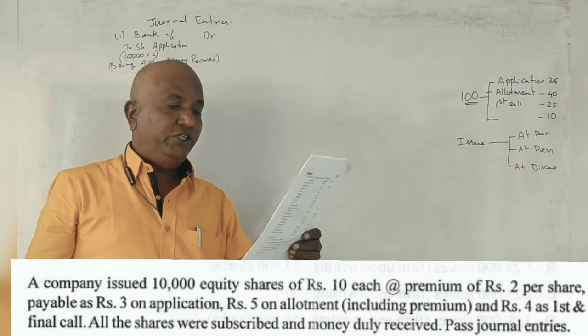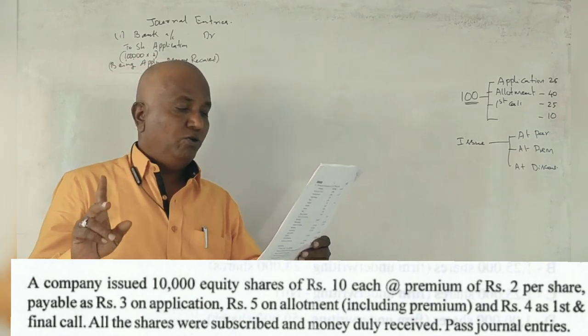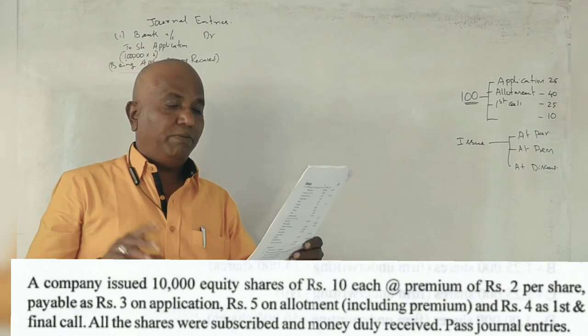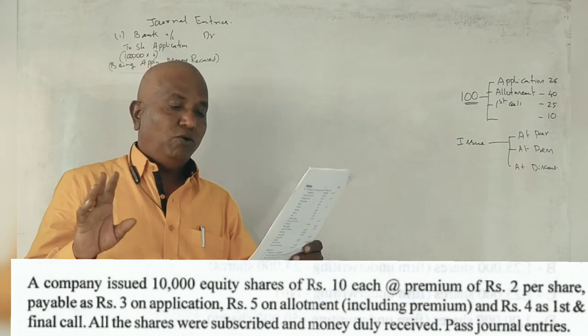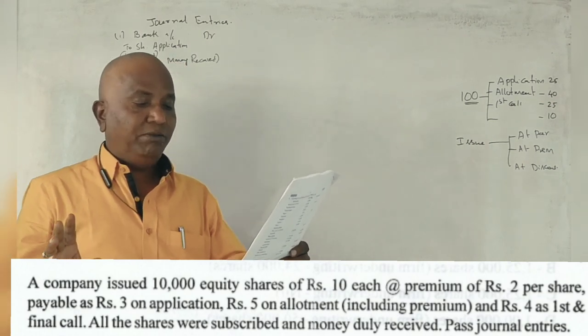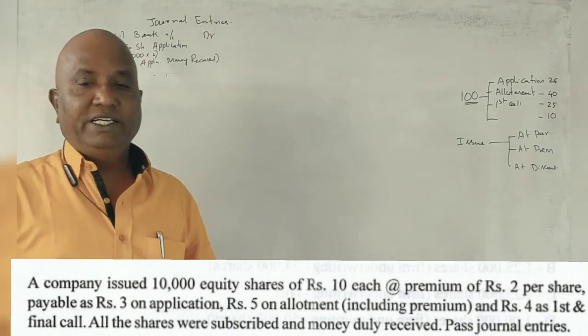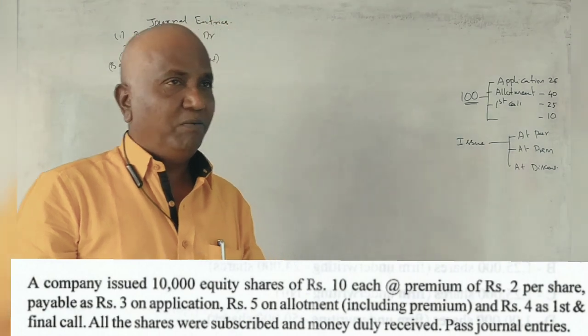A company issued 10,000 shares of Rs. 10 each at a premium of Rs. 2 per share, payable Rs. 3 on application, Rs. 5 on allotment including premium, and Rs. 4 on first and final call. All the shares were subscribed, money duly received. This is not a plain question, correct? It's a plain question.